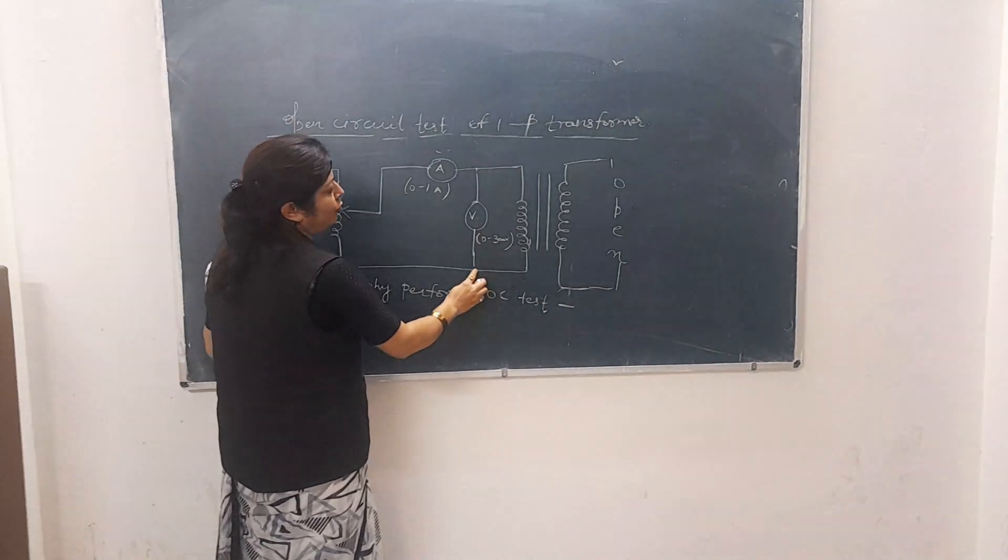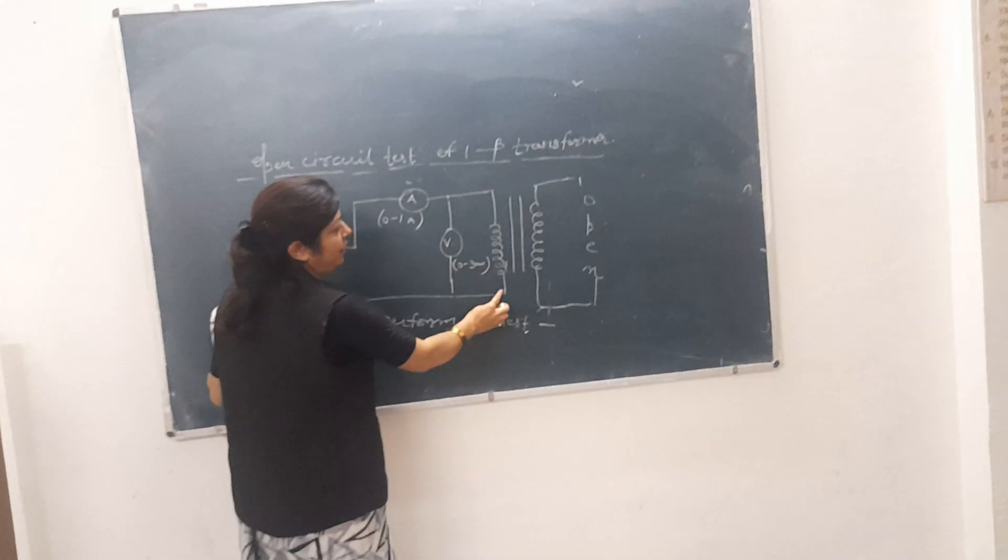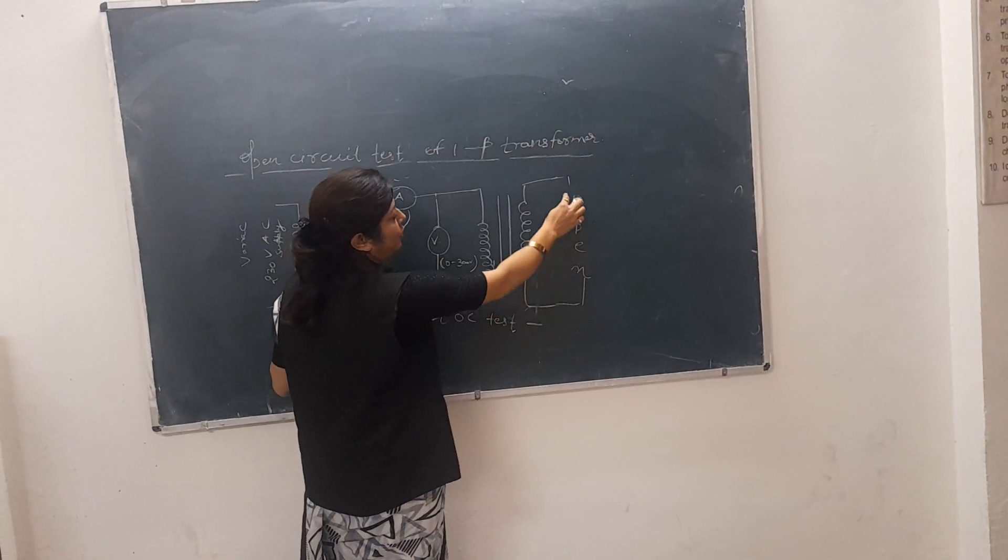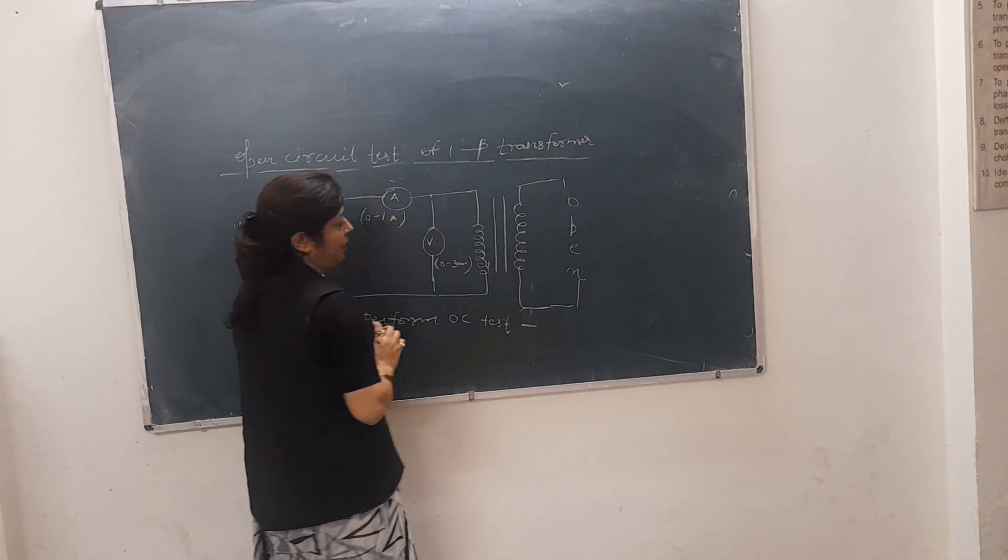These two points of the voltmeter are connected with the primary winding. And you can see this is the secondary winding, so it will be open because we are doing the open circuit test.